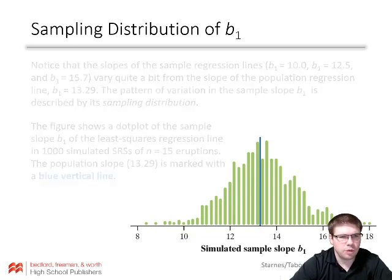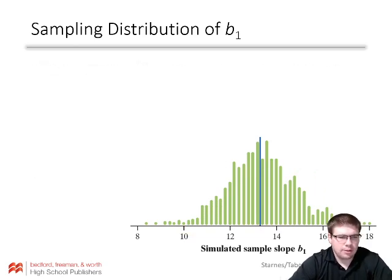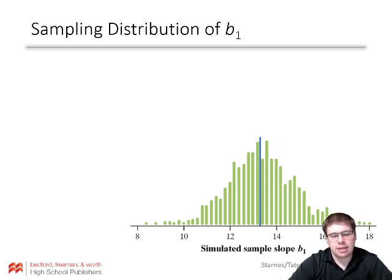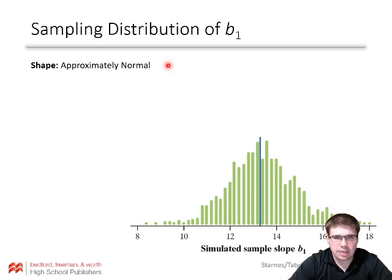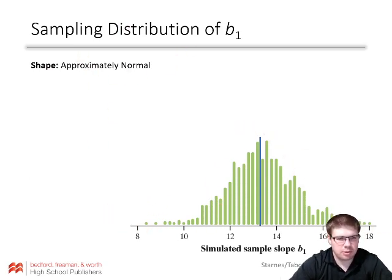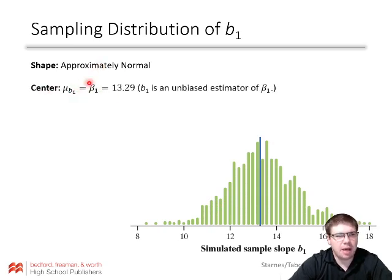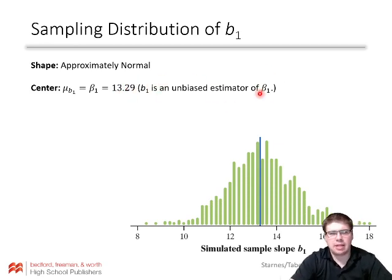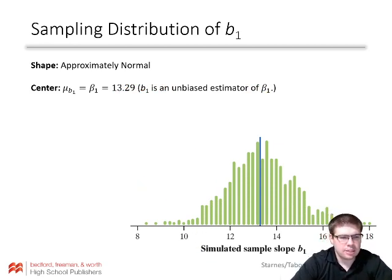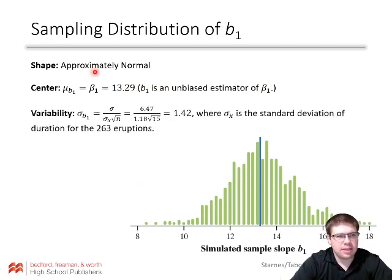We want to be able to describe the shape, center, and spread of the sampling distribution of sample slopes. The shape works out to be approximately normal. The sample slope B1 is an unbiased estimator of the population slope — sometimes it will be high, sometimes low, but we average out to the actual population slope.